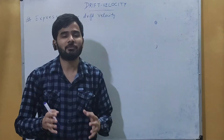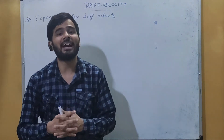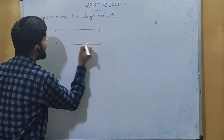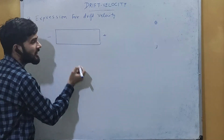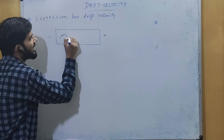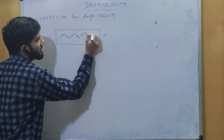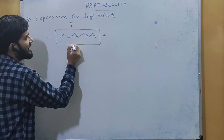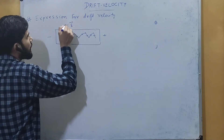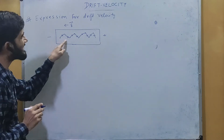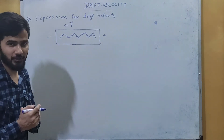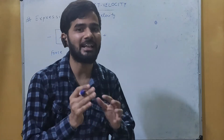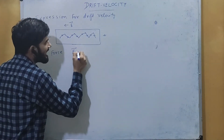After understanding what drift velocity is, let us find the expression for drift velocity. Let us assume we have a conductor with a negative potential applied on one end and a positive potential on the other, so electrons move from the negative towards the positive side. There will be an electric field inside the conductor directed from positive to negative, while the electron moves from negative to positive. The force on that electron due to the electric field is F equals qE.